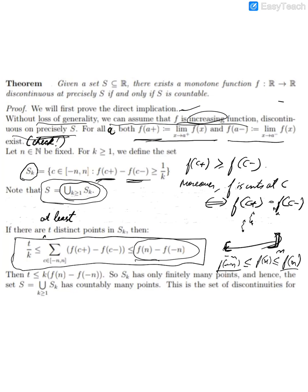And thus you have that t ≤ k·[f(n) - f(-n)]. Now, as this thing is bounded and k is obviously a fixed natural number, in fact t is bounded. So the number of distinct points in S_k is finite. And now we are done because then S is just the countable union of finite sets and thus S is countable.